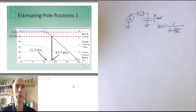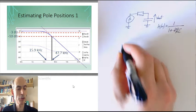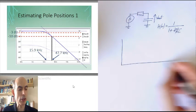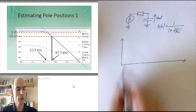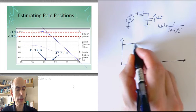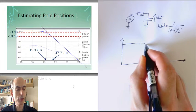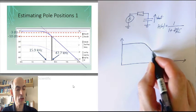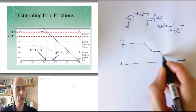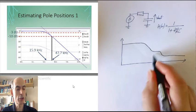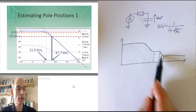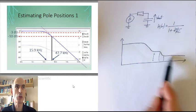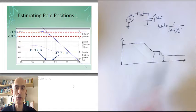The only slight problem would come if there are some other high frequency break frequencies as well. The graph might look something like this: starts going down, but then maybe there's a zero and another pole, and a zero at higher frequencies — and we no longer have a nice high frequency asymptote going at 20 dB per decade.